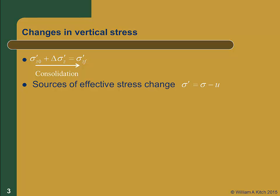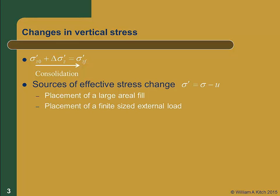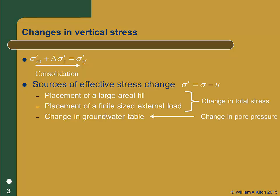Remembering our fundamental equation that the effective stress is equal to the total stress minus the pore water pressure, we can see that the effective stress can be changed by either changing the total stress or changing the pore water pressure. There are three major sources of effective stress changes: placement of a fill that covers a large area on the ground surface; placement of a load on a finite sized area such as a square or rectangular footing; and changes to the groundwater table. The first two sources change the effective stress by changing the total stress. The third source uses a change in pore water pressure to change the effective stress.